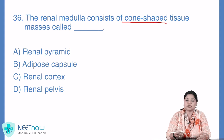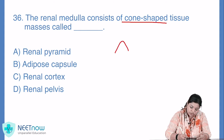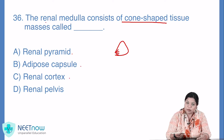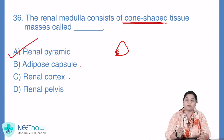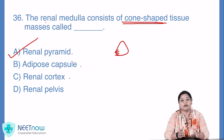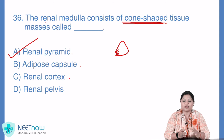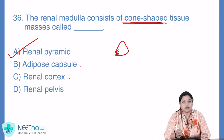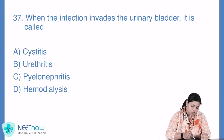Question number 36: the renal medulla consists of cone-shaped tissue masses called — renal medulla mein cone-shaped is shape ke masses hote hain, unko kya kaha jata hai? Options: renal pyramid, adipose capsule, renal cortex, ya renal pelvis. Jaahan tak baat karein renal medulla mein present cone-shaped tissues ki, toh woh hote hain renal pyramids — medulla mein present. Maine har ek video mein yahi kaha hai ki aapko do diagrams bahut acche se yaad rakhne hain — ek nephron ka, doosra kidney ka. Toh jahan pe cone-shape aaye, that is renal pyramid. So yahan pe option A aapka sahi hai.